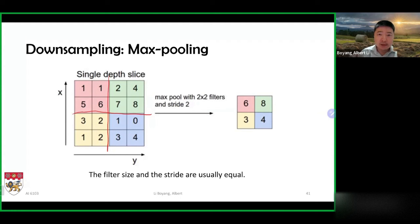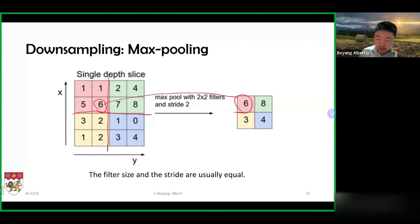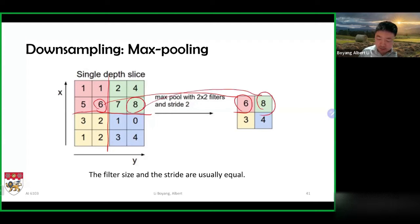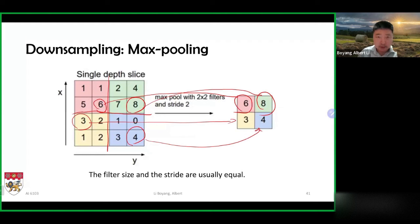For example, the maximum value in the two by two red area is six, and I will copy that number to my output. Similarly, for the green area, I will identify the maximum and copy it over. The maximum for the next area is three, and here the maximum is four. So this is the max pooling operation.